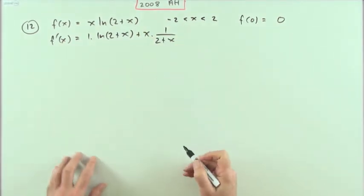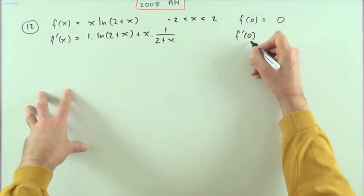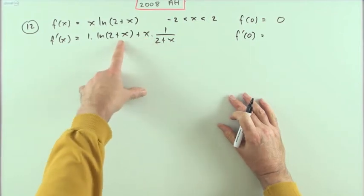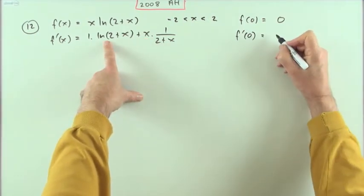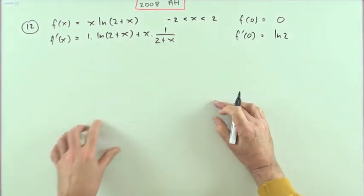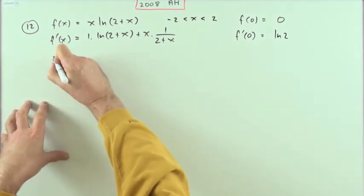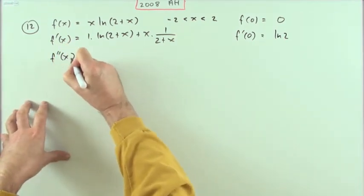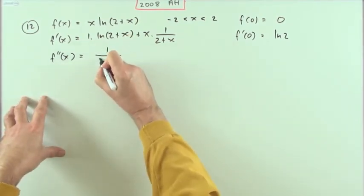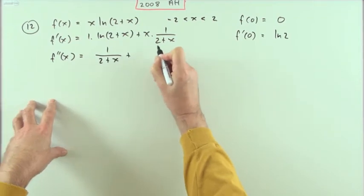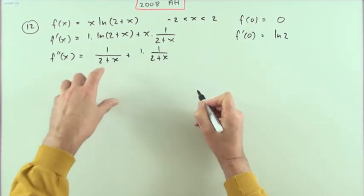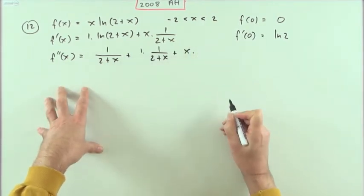What's the value of the first derivative when x is zero? Well, the x times something part gives zero, but we get 1 times ln(2) — so that's ln 2. Now for the second derivative: the derivative of ln(2+x) is 1 over (2+x), plus a product term — 1 times 1 over (2+x) — giving me another of them, plus x times the derivative of 1/(2+x).